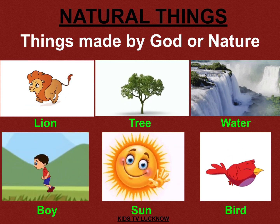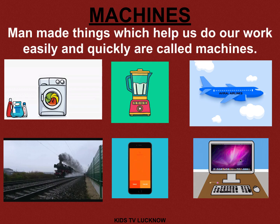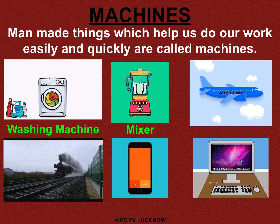Now let us move to machines. Do you know what are machines? Man-made things which help us to do our work easily and quickly are called machines. As you can see the pictures: the first one is washing machine. This machine is very helpful for us. In earlier days we used to wash our clothes with our hands, but nowadays we use a washing machine. The second one is mixer. We can mix two or three things together in a mixer.